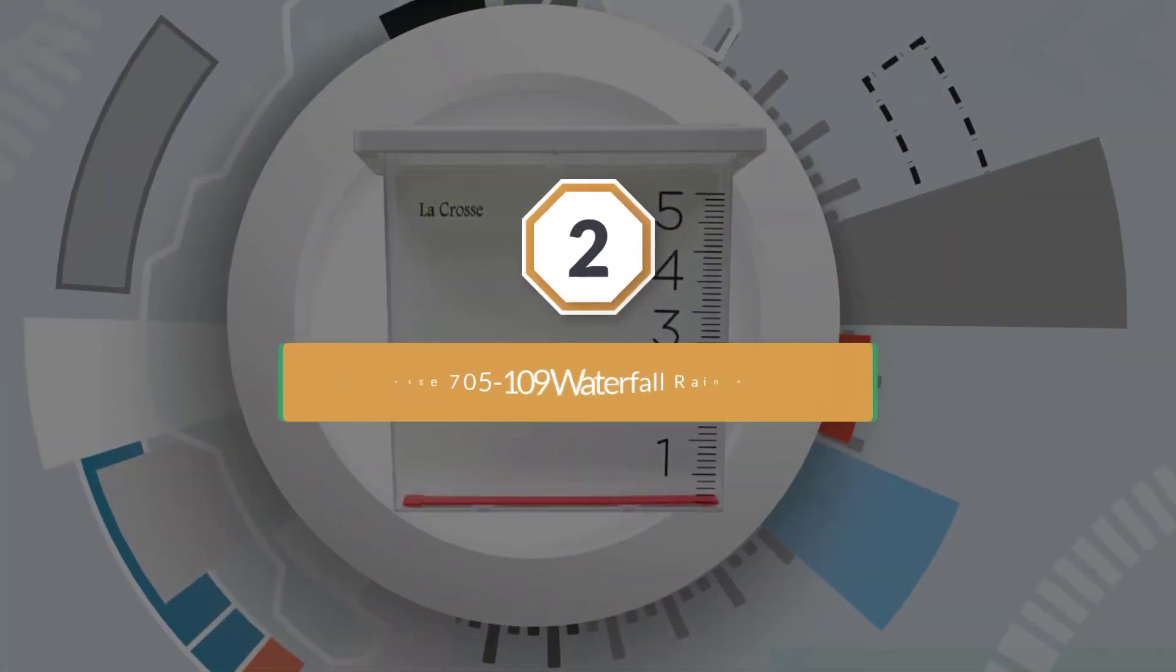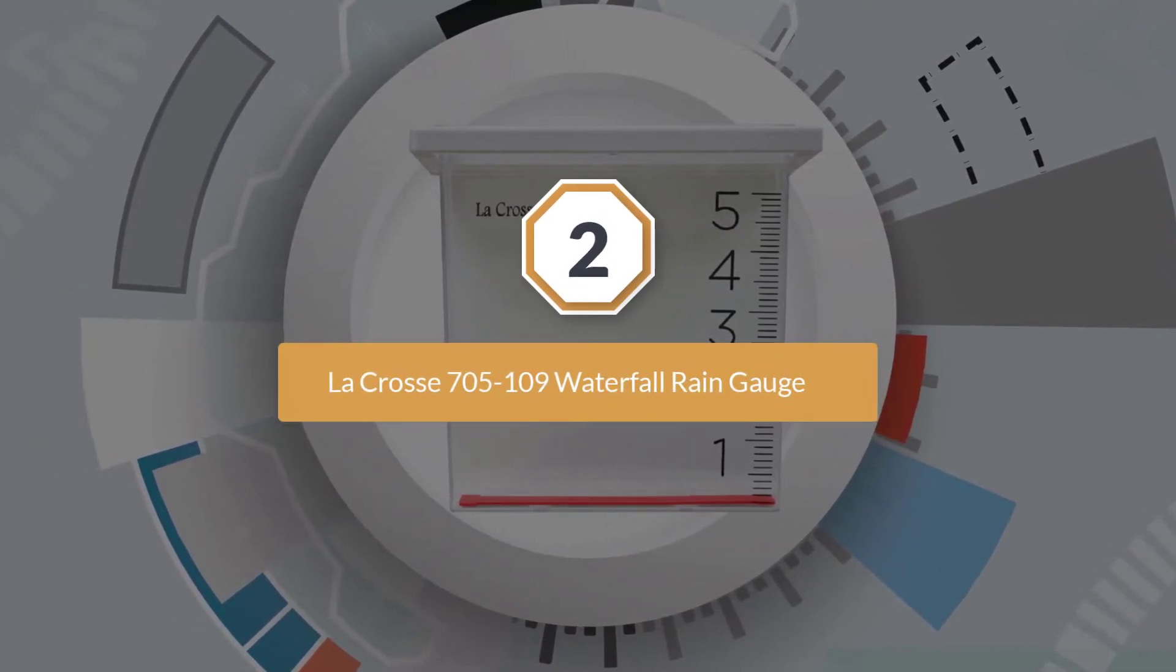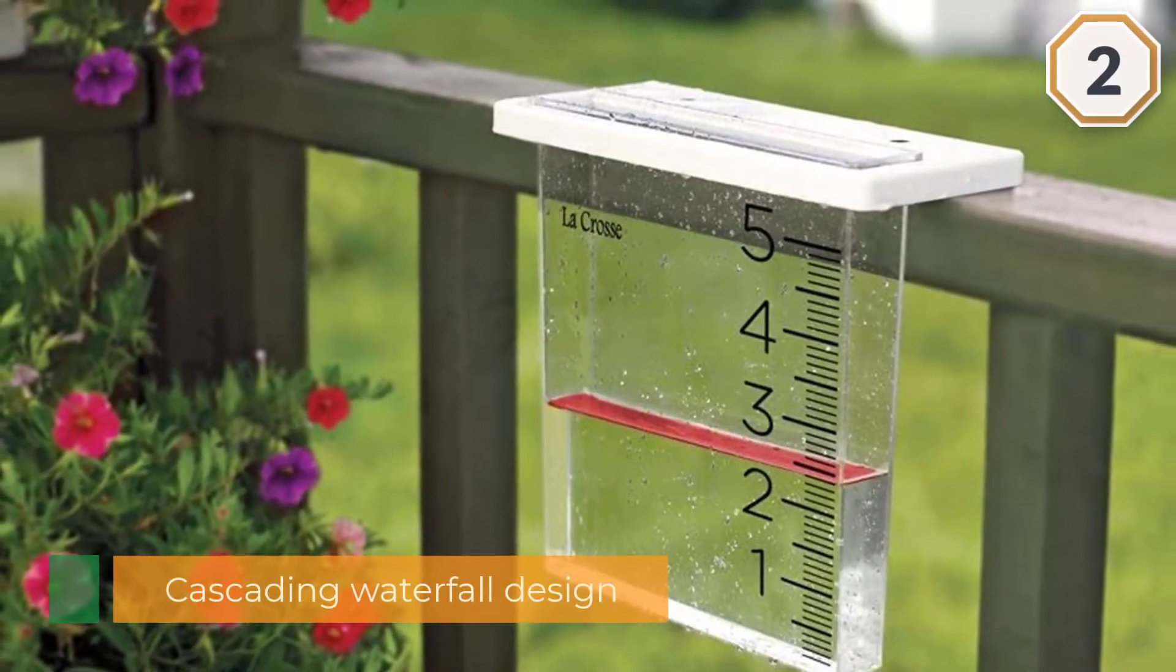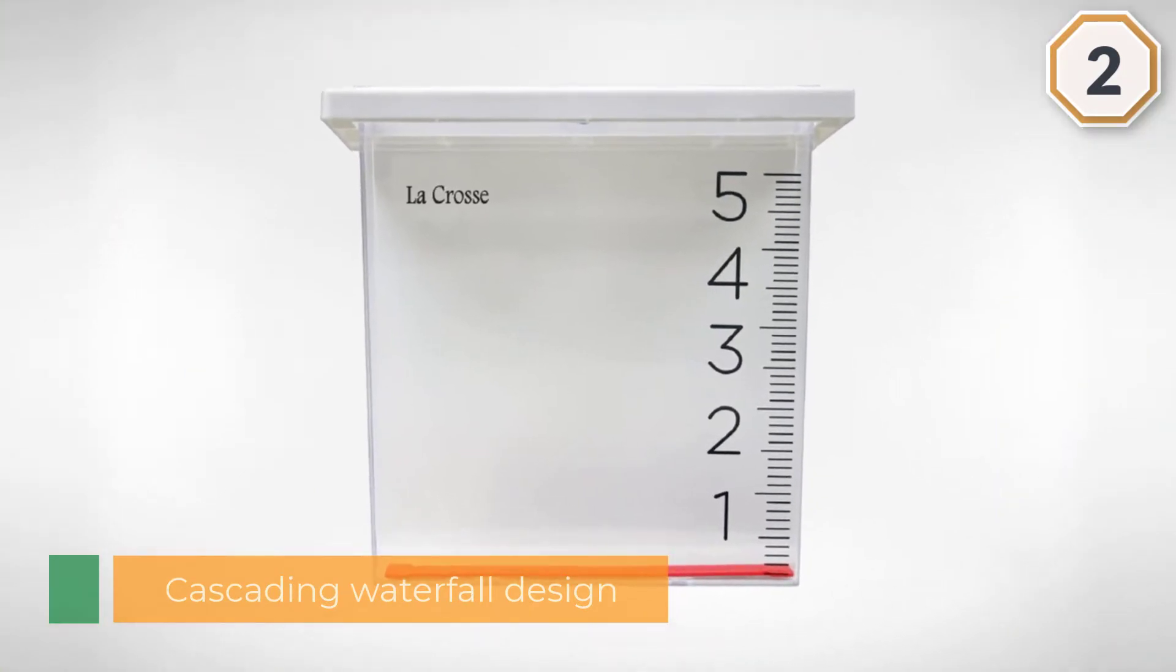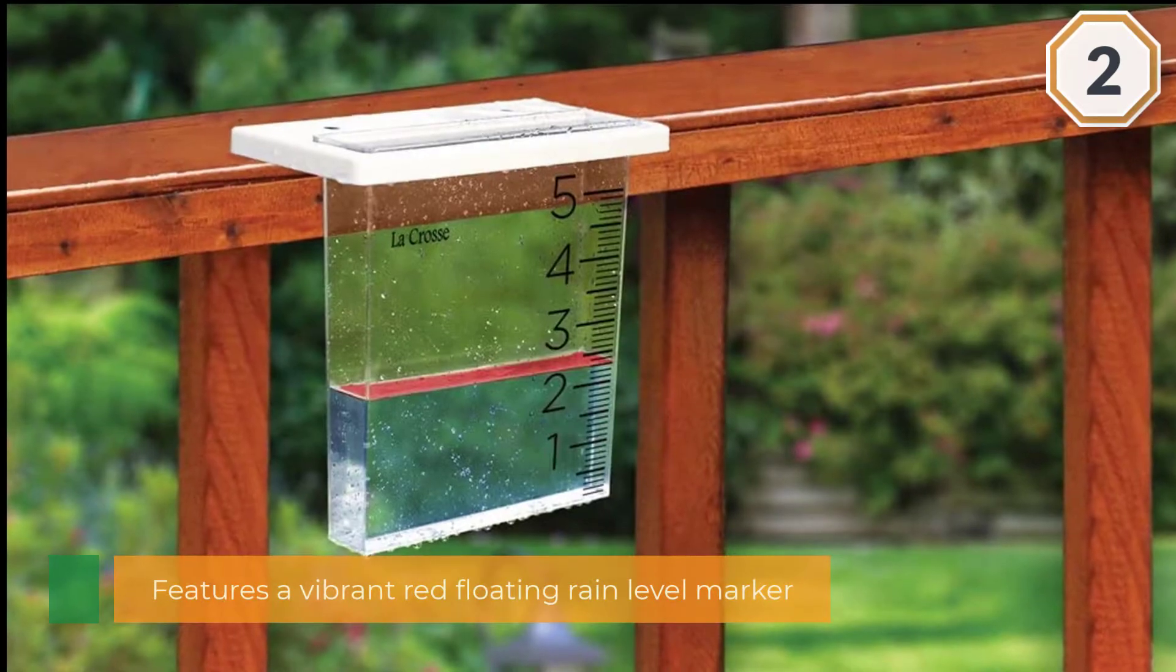Number two: Lacrosse 705109 Waterfall Rain Gauge. The cascading waterfall design of this rain gauge from Lacrosse will make every garden come alive. Its extra large digits and clear measurement lines make it stand out among several other rainfall measuring devices.